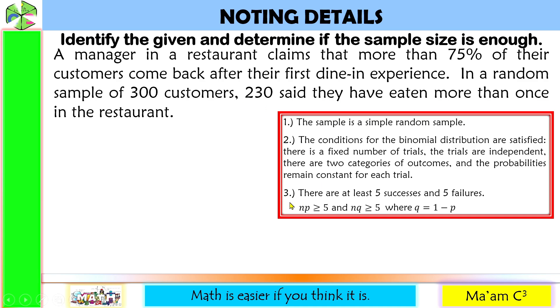Number 3, we are going to compute for this one a little later. Now, let us determine the given in this situation. We have here P, the population proportion. It says here a manager in the restaurant claims that more than 75%, so this is our population proportion, 0.75. Our N is the sample size, which is 300. And out of 300, 230 said yes that they have eaten more than once in this restaurant. That is our successes. So X is equal to 230.